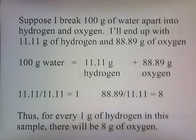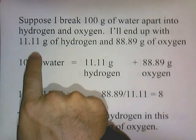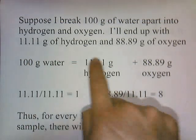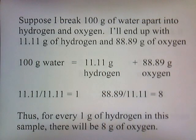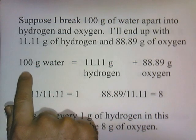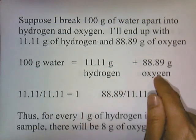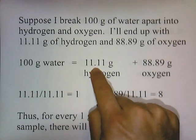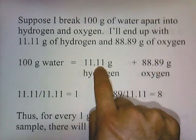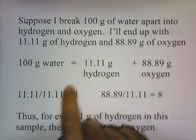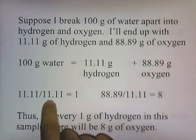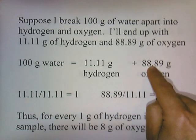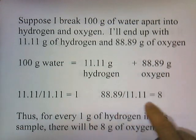For example, suppose I break 100 grams of water apart into hydrogen and oxygen. You'll end up with 11.11 grams of hydrogen and 88.89 grams of oxygen. Since 11.11 is the smallest number between these two, we're going to divide both numbers by 11.11. So, 11.11 divided by itself is 1, and then 88.89 divided by 11.11 gives you 8.